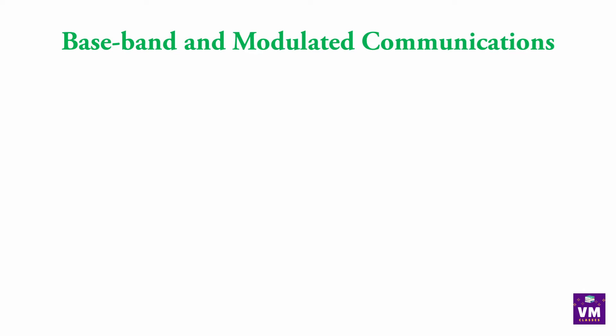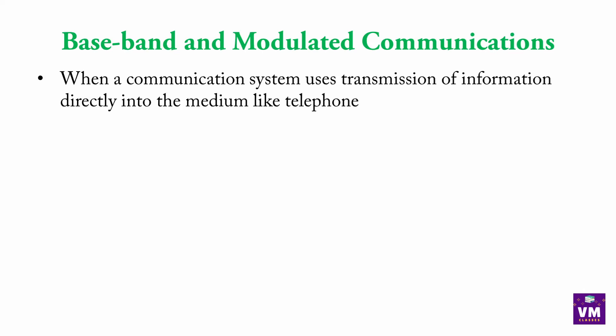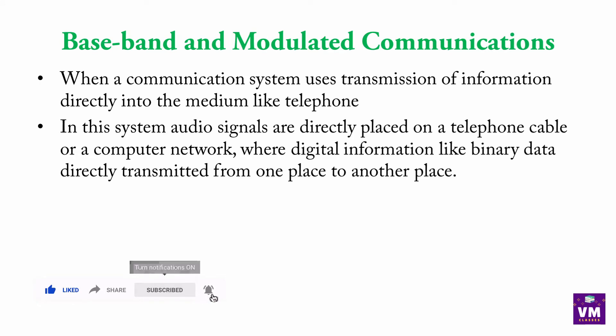Next hai baseband and modulated communication. When a communication system uses transmission of information directly into the medium like telephone, to jab direct communication ho raha hai usse bolte hai baseband communication. In this system, audio signals are directly placed on the telephone cable or computer network where digital information like binary data is directly transmitted from one place to another. Jo broadband hota hai, purane jo phone the, usmein hum wire lagate hai, phir wire ke zariye direct information send hoti hai — usse bolte hai baseband communication.